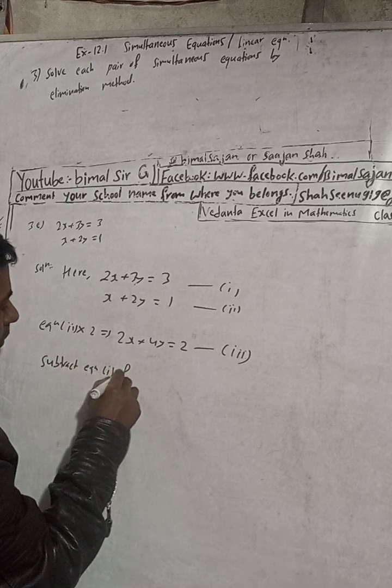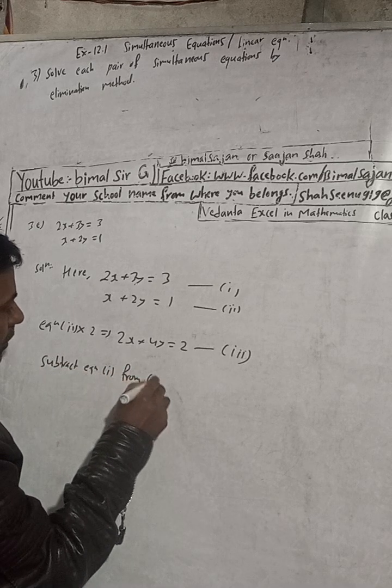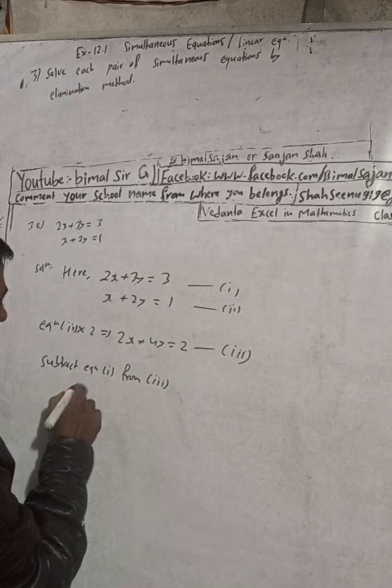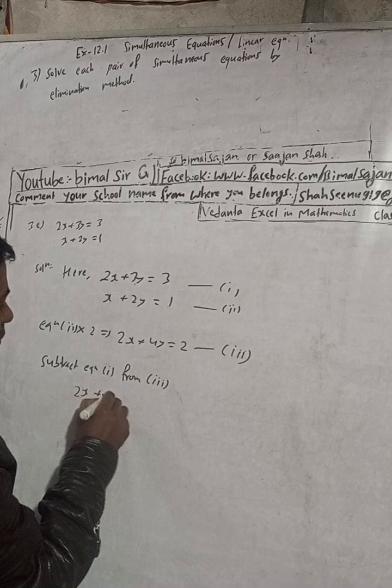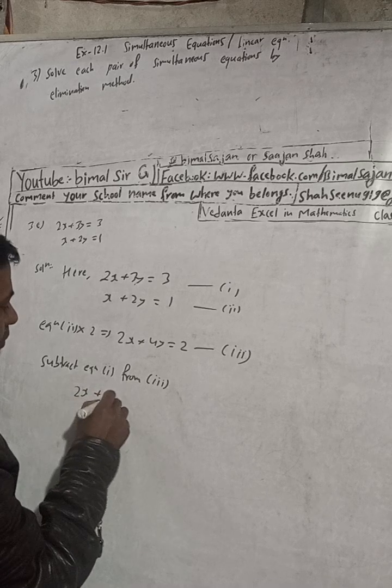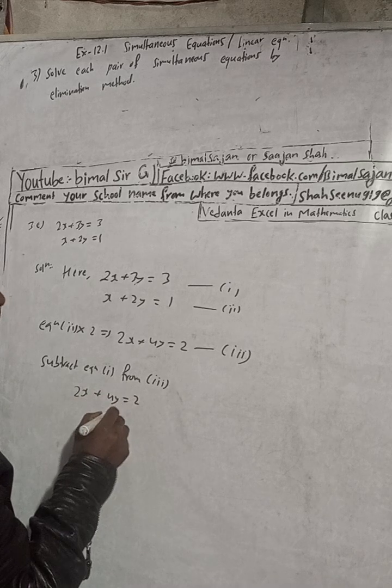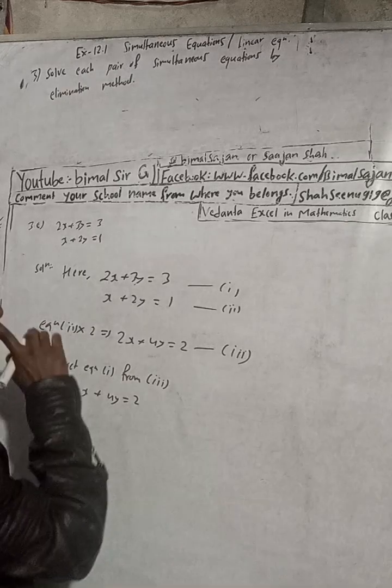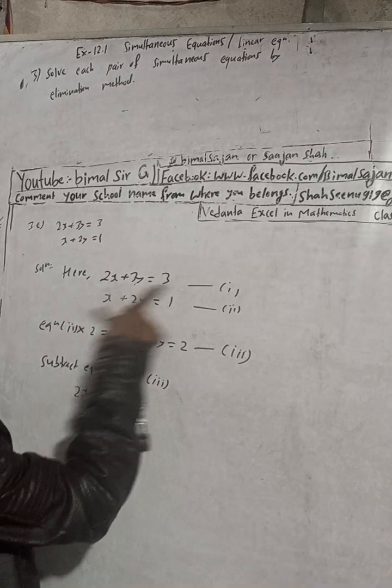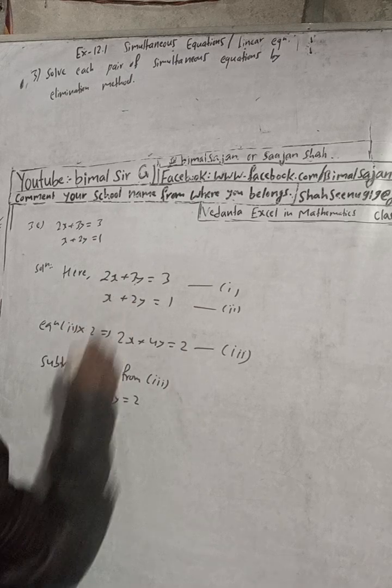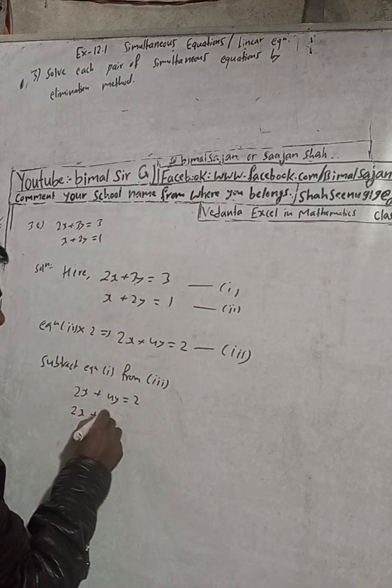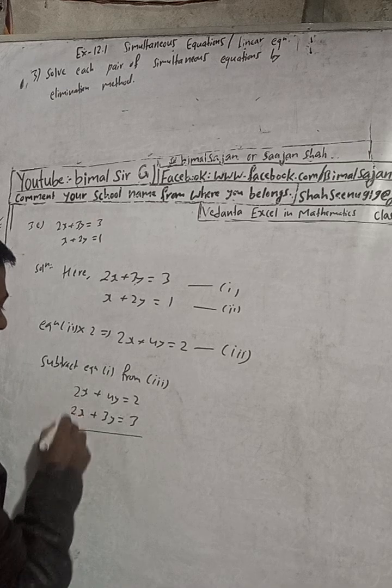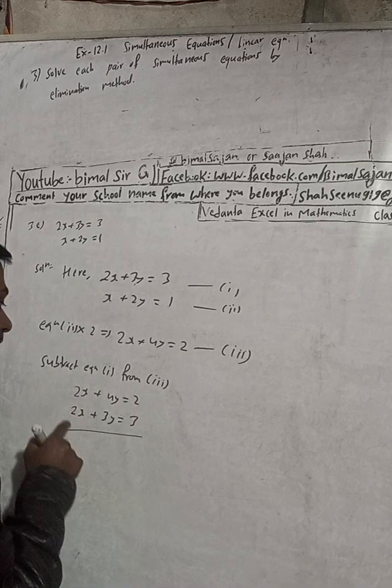Subtract equation 1 from 3. So first write this: 2x plus 4y is equal to 2. And now equation 1: 2x plus 3y is equal to 3. Now we can see that this is 2x plus 2x, so subtract. Subtraction is there, subtract.